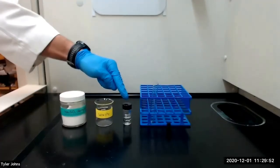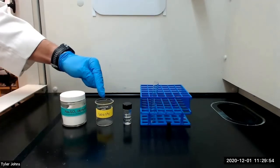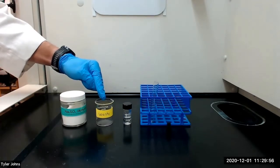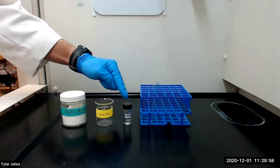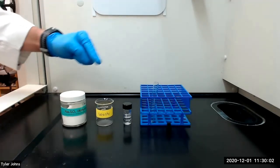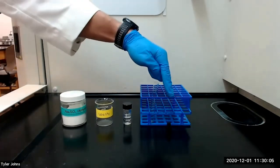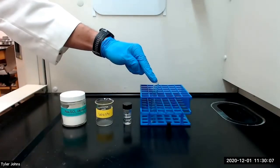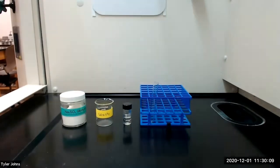After the layers have separated, we will remove and discard the bottom aqueous layer and then transfer the remaining organic layer to a small test tube. We will then dry the organic layer over anhydrous sodium sulfate. We will stopper the test tube and allow the organic layer to dry for 15 minutes.